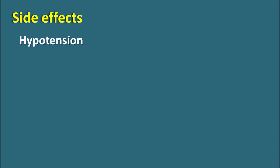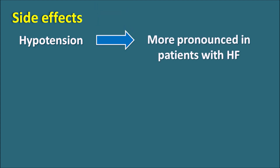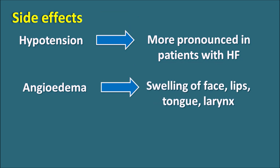Another important side effect is hypotension. Since this drug acts as an antihypertensive agent, it can produce hypotension, which is more pronounced in patients with heart failure, because in heart failure there is already decreased force of contraction and decreased cardiac output, and Lisinopril can further decrease blood pressure. Similarly, angioedema — due to accumulation of bradykinin and other mediators — can result in swelling of the lips, face, tongue, and larynx. Intestinal angioedema can also cause abdominal pain. If any of these symptoms are observed, the drug should be immediately stopped.